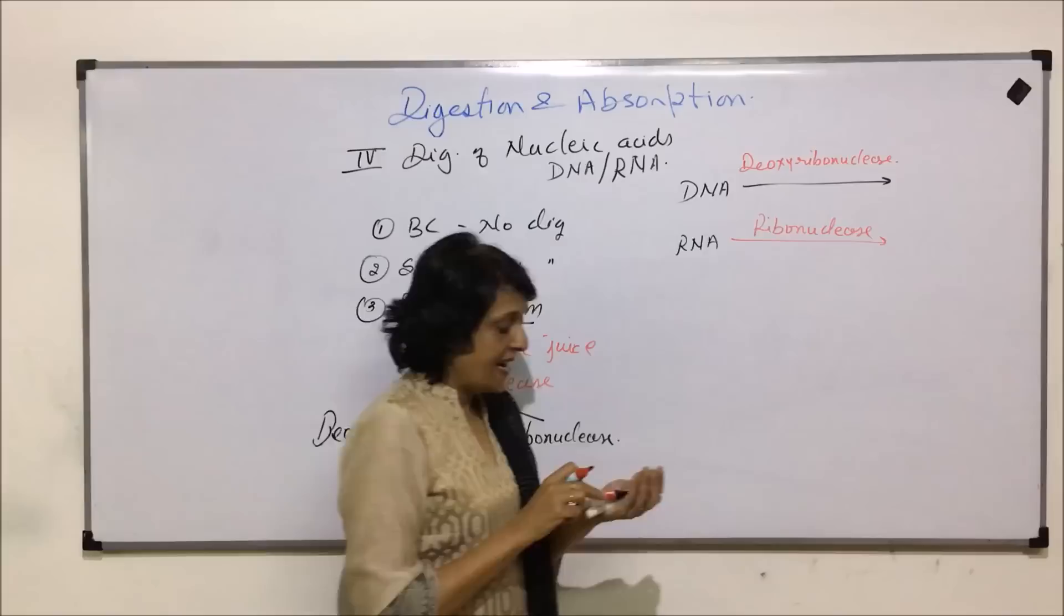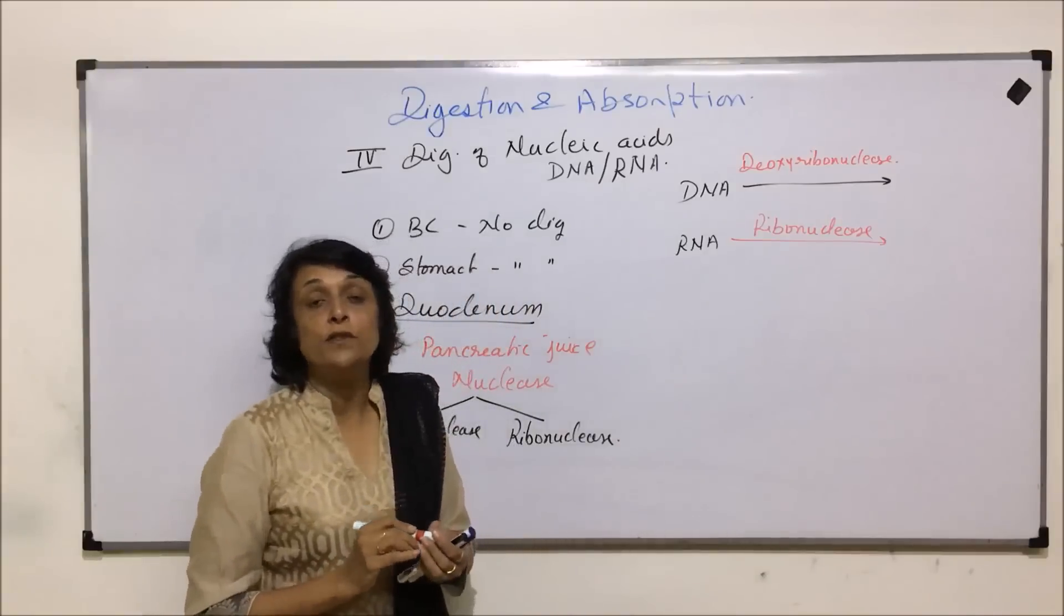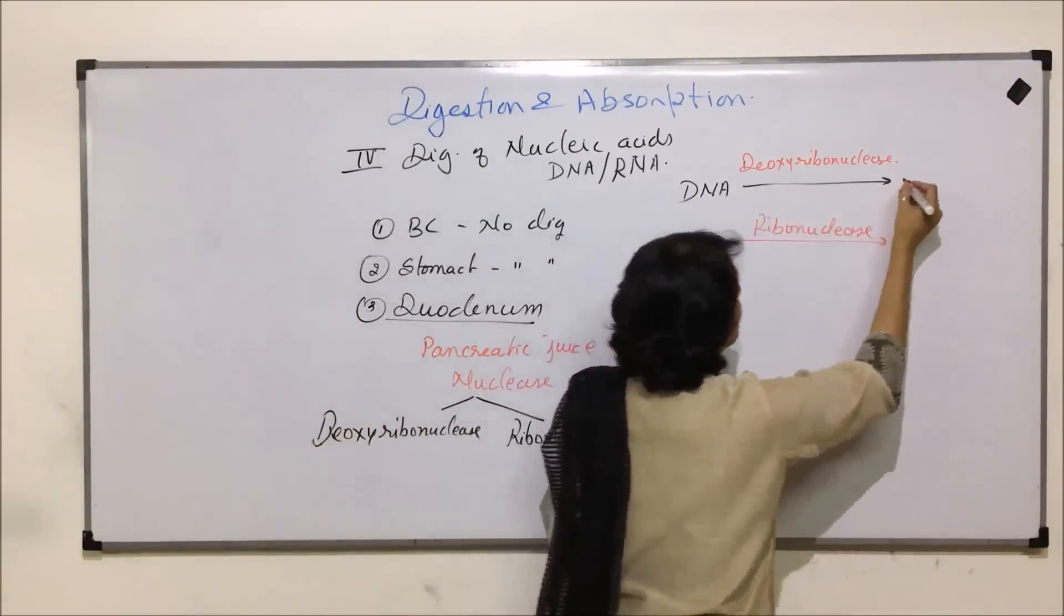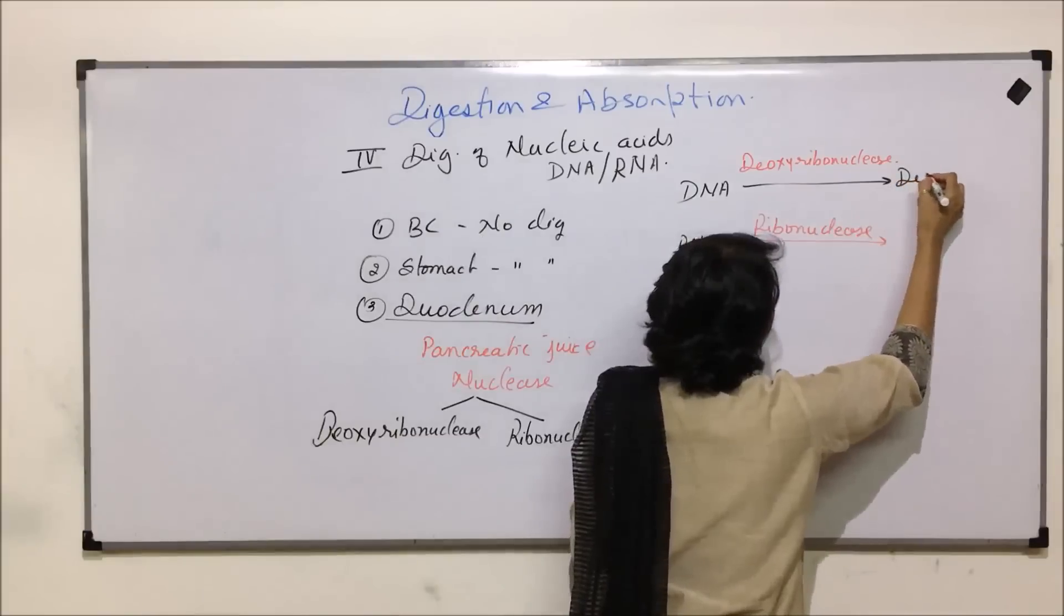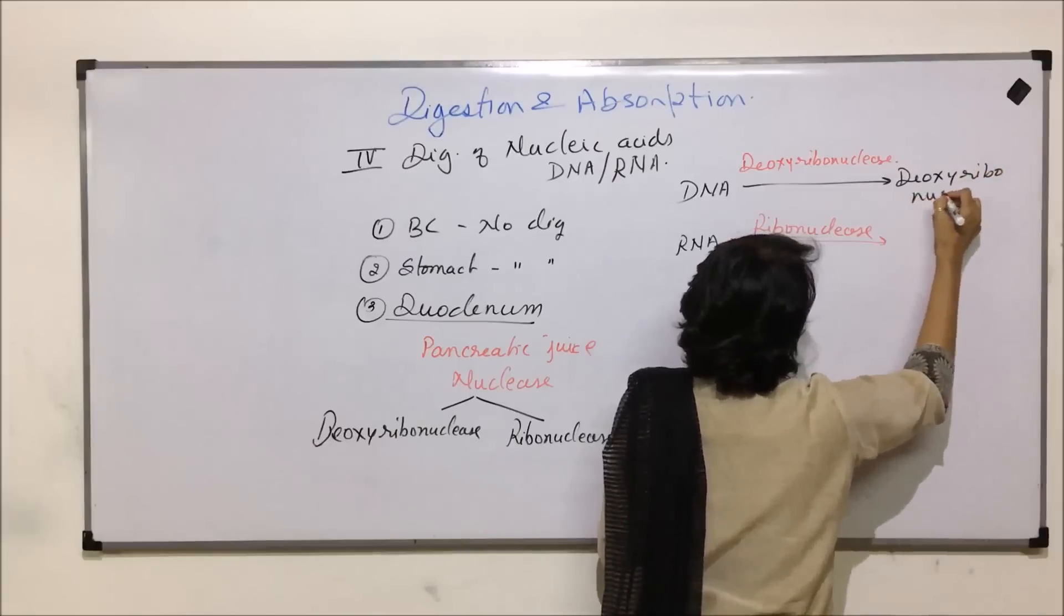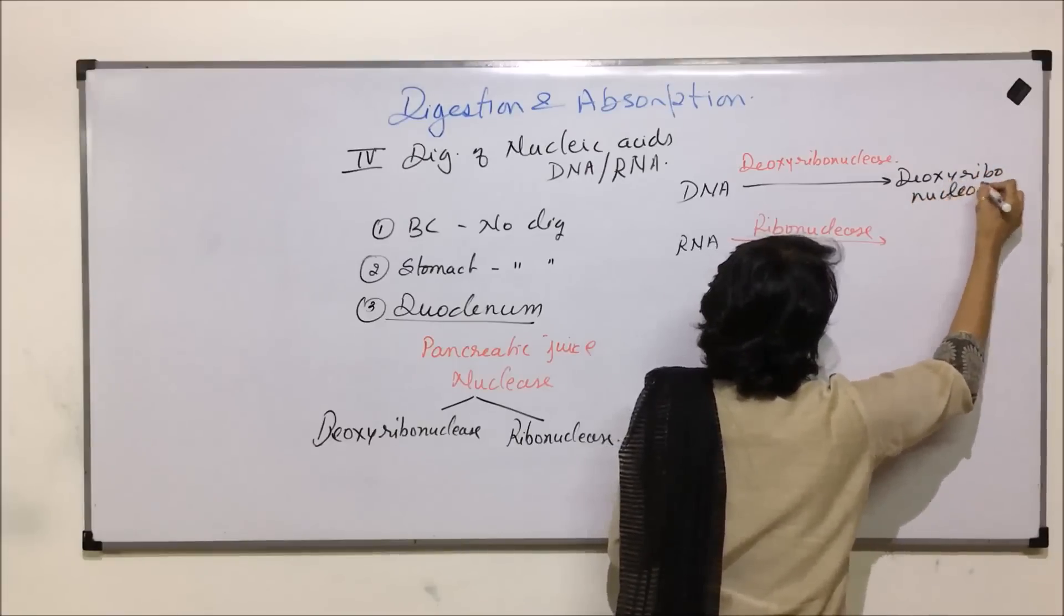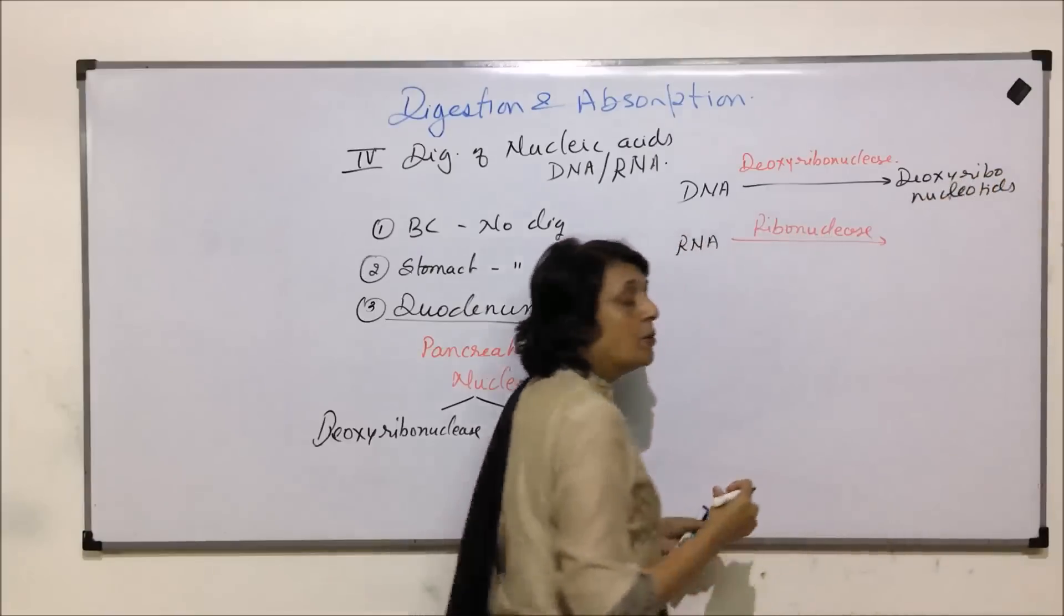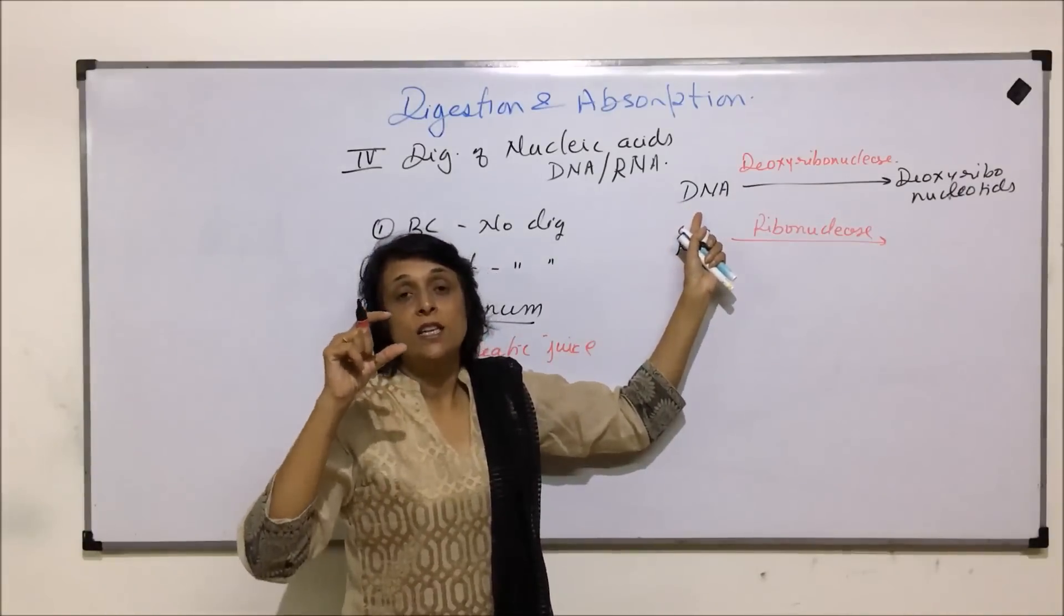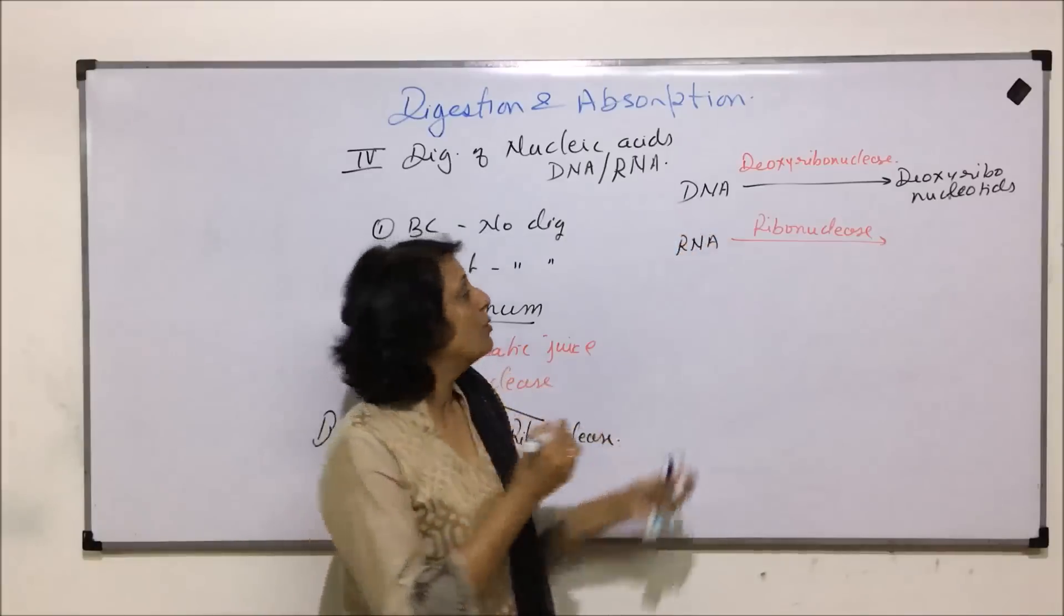And we know that DNA and RNA are made up of nucleotides. So when DNA molecule is broken down, we get deoxyribonucleotides. Or in simple words, we can say DNA is broken down into its units, that is nucleotides.